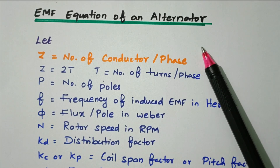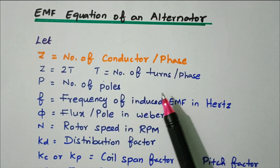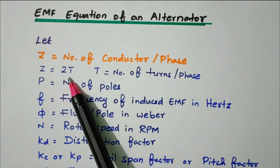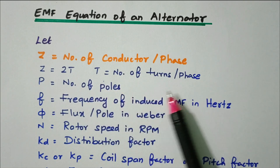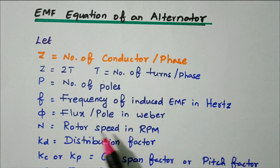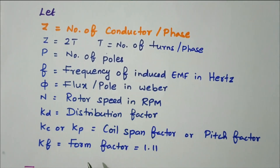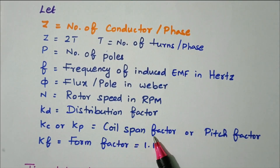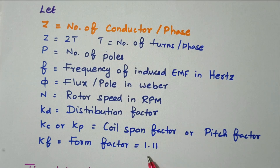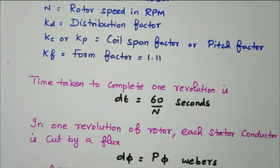Let us consider: Z is the number of conductors per phase, which can be written as Z = 2T, where T is the number of turns per phase. P is the number of poles. F is the frequency of induced EMF in hertz. Phi (Φ) is the flux per pole in weber. N is the rotor speed in RPM. Kd is the distribution factor. Kc or Kp is the coil span factor or pitch factor. Kf is the form factor — 1.11 for a sinusoidal waveform.